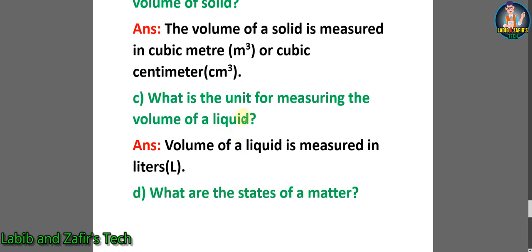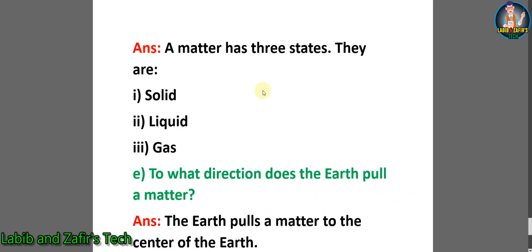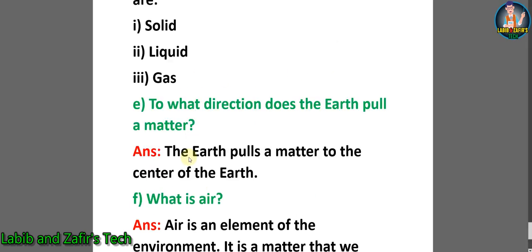Question C: what is the unit for measuring the volume of a liquid? Answer: volume of a liquid is measured in liters, symbolized by L. Question D: what are the states of matter? Answer: matter has three states — solid, liquid, and gas. Question E: in what direction does the Earth pull matter? Answer: the Earth pulls matter toward the center of the Earth.